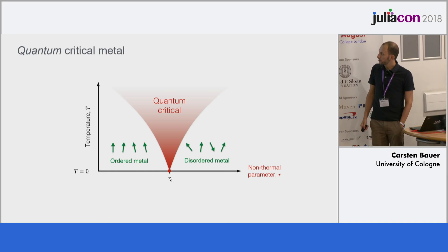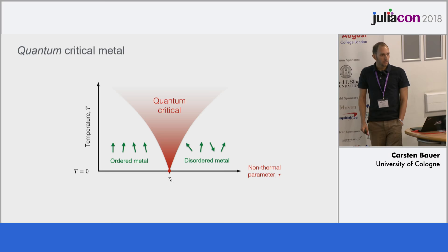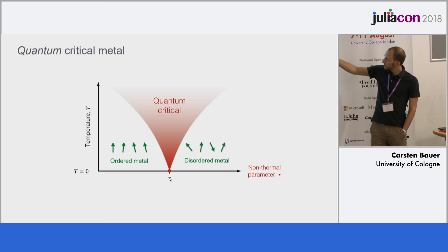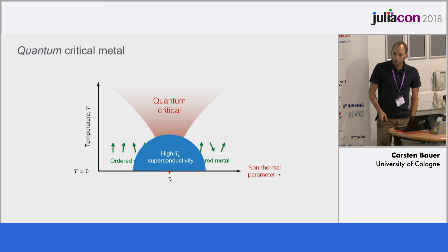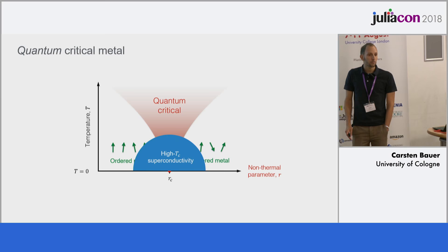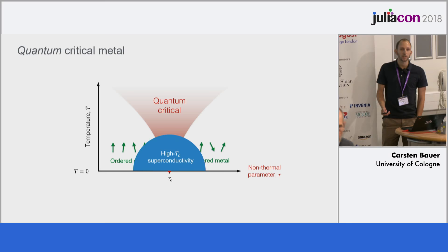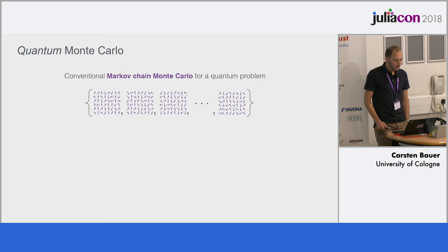I ask the question: how do the metallic properties of that system depend on where I am in this phase diagram, and in particular what's the nature of the metallic state in this quantum critical regime? Quite often new phases appear in relation to this quantum critical effect, such as high temperature superconductivity, which is a phase where the electrons conduct electricity with vanishing resistance. And to answer these kinds of questions, I apply quantum Monte Carlo.